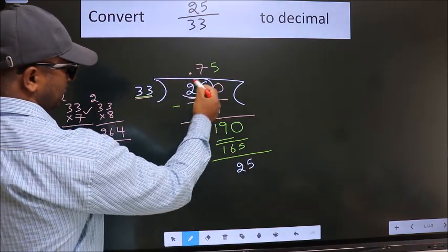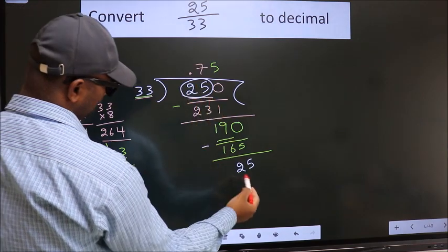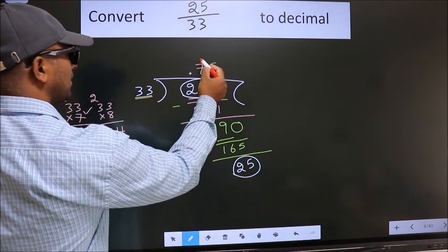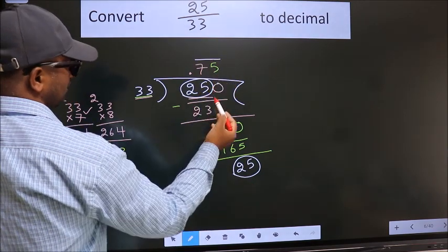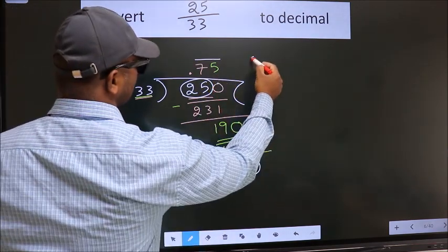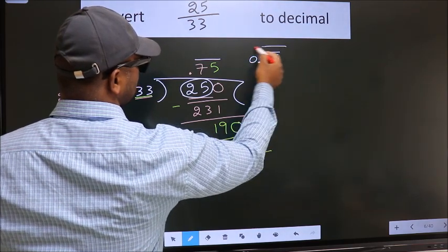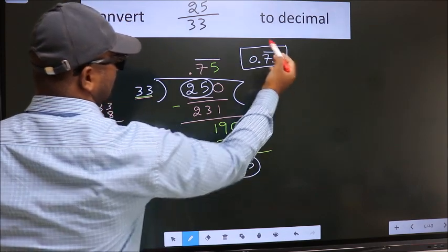We had 25 here, we got 25 again. That means we get a bar on these two numbers. Therefore our answer is 0.75 with a bar on these two numbers. This is our answer.